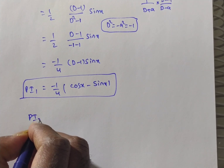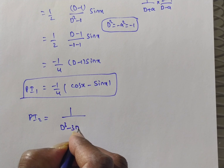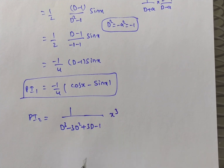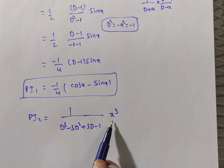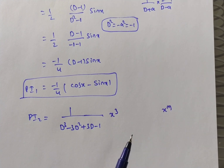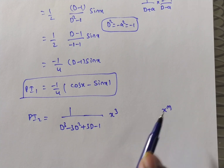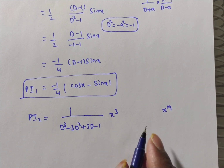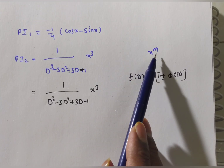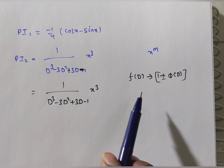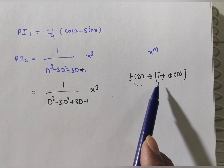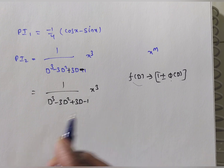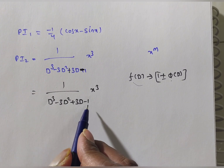Now for PI₂ = 1/(D³ - 3D² + 3D - 1) · x³. Since Q(x) = x³ is a polynomial of the form x^m where m is a positive integer, we apply the shortcut method. We convert f(D) into the form (1 ± φ(D)) so we can apply the binomial expansion.